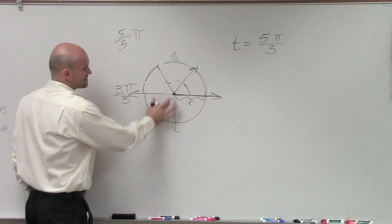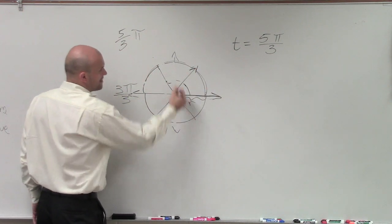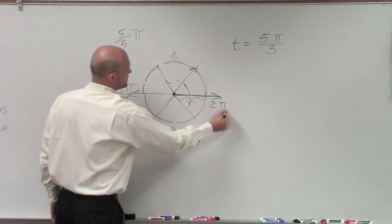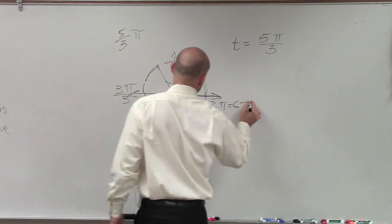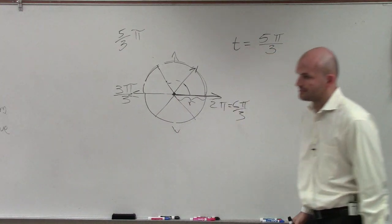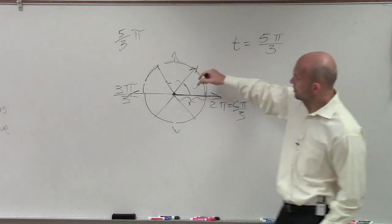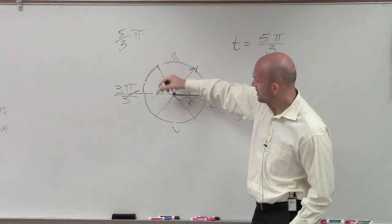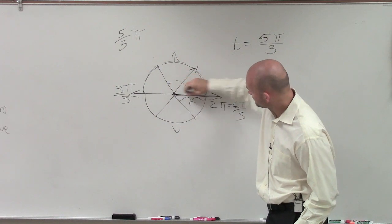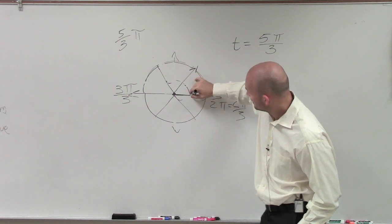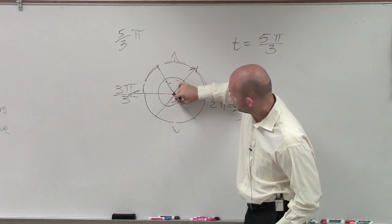So the question, though, is we can do this again on the bottom. Because remember, wrapped all the way around a circle is 2 pi, which in this case would be 6 pi over 3. Because 6 divided by 3 is 2. So 1 pi, 2 pi, 3 pi, 4 pi, 5 pi. So here's my initial side, and I wrap all the way around to here.